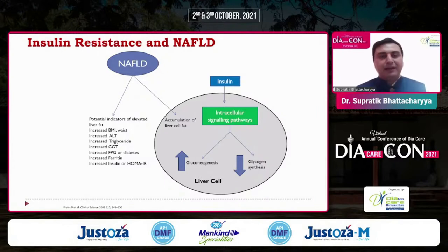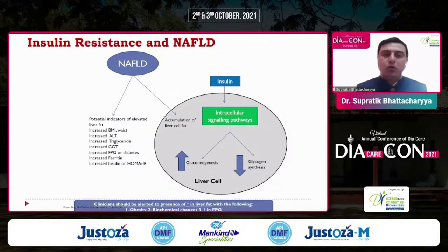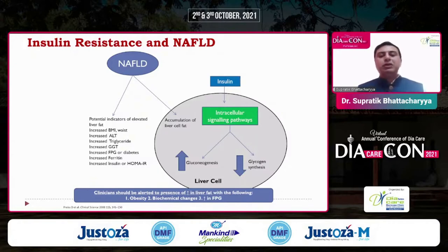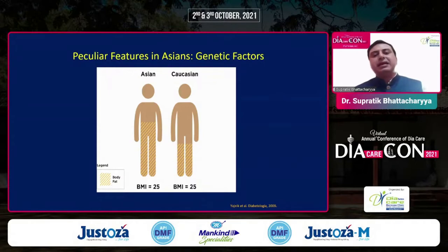Patients should always be alerted in the presence of increased liver fat. If they have obesity, biochemical changes, or increased fasting glucose or impaired glucose tolerance, these are warning signs. A peculiar feature in Asians is that they carry a lot more fat around the waist compared to Western counterparts, and because of that they have higher insulin resistance.